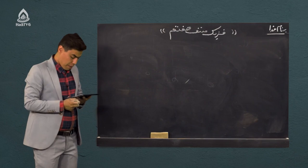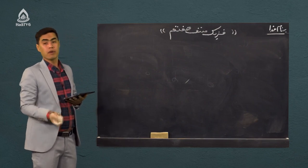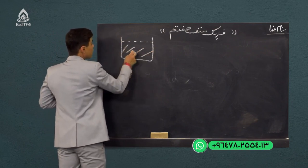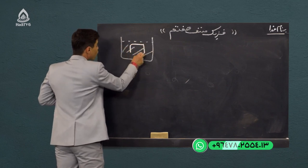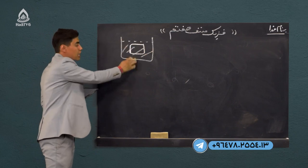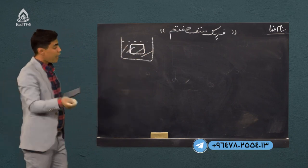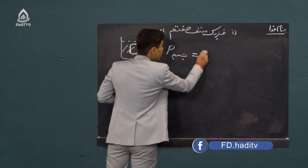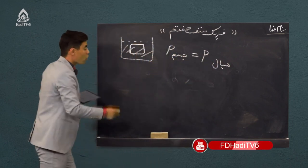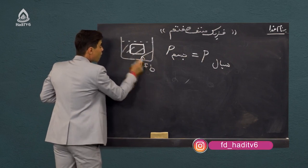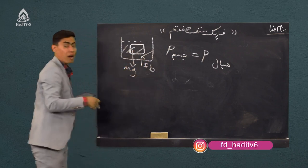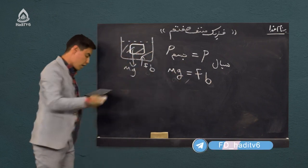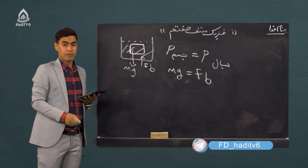حالت دوم: جسم در آن سیال شناور میماند — یعنی نه به سطح میآید نه پایین میرود، وسط شناور میماند. در این حالت چگالی جسم مساوی است با چگالی سیال، و همچنین قوه صعودی FB مساوی است با قوه وزن MG.